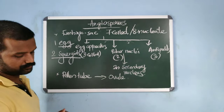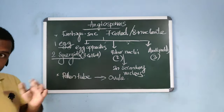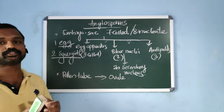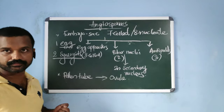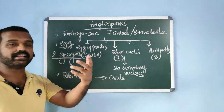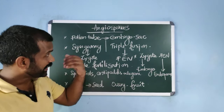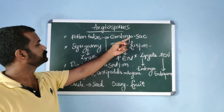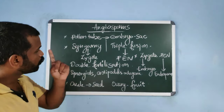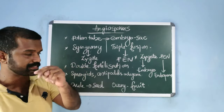The embryo sac also has two polar nuclei and three antipodals. The two polar nuclei eventually fuse to form a diploid secondary nucleus. After pollination — which in angiosperms occurs via various agents, both biotic and abiotic — the pollen germinates and the pollen tube grows through the style carrying the male gametes towards the ovule.